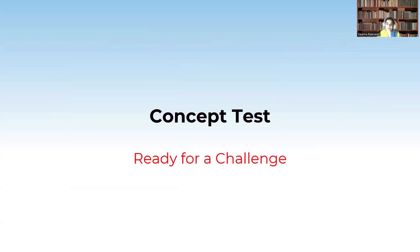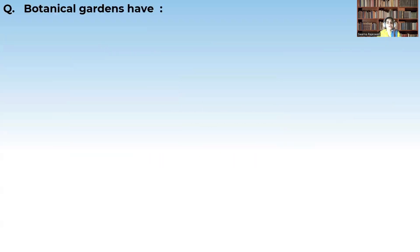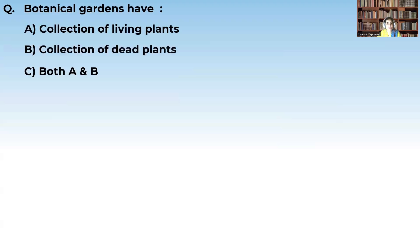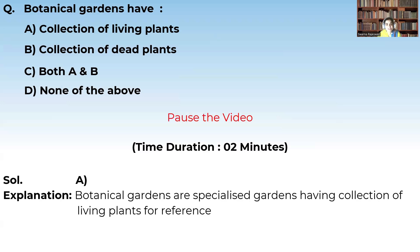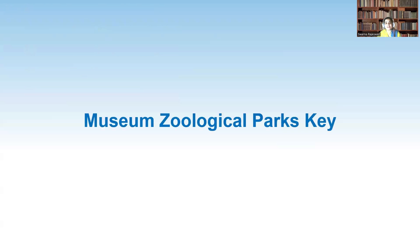Let us take a small concept test. Botanical gardens have: collection of living plants, collection of dead plants, both A and B, or none of them? The correct answer is — botanical gardens are specialized gardens which have a collection of living plants for reference to study the characters and names of the plants.